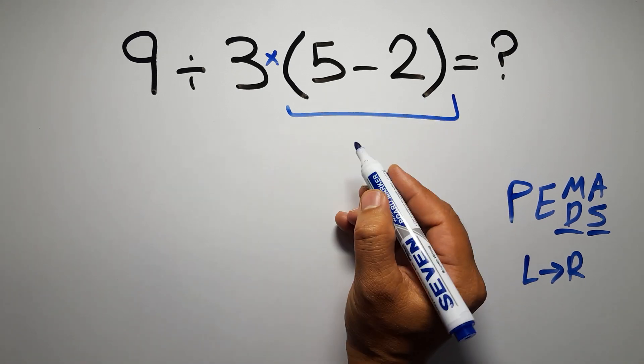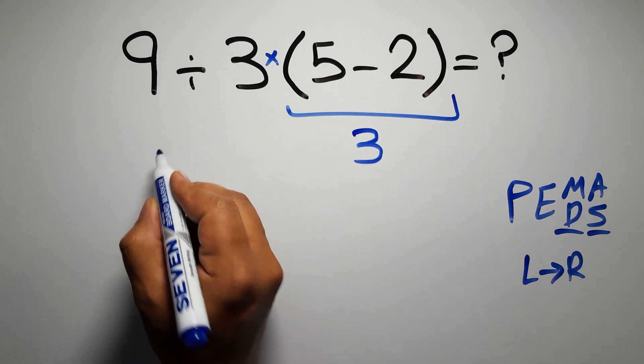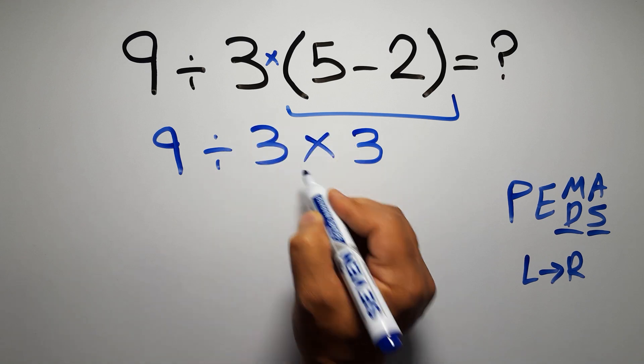So first this parenthesis. Inside this parenthesis, we have 5 minus 2, which equals 3. So 9 divided by 3, then times 3.